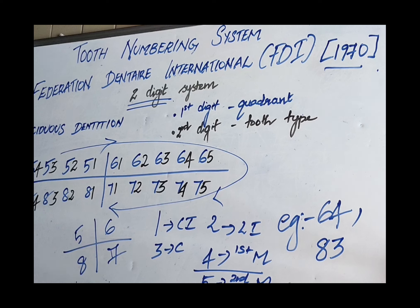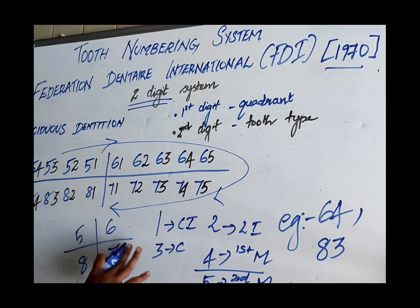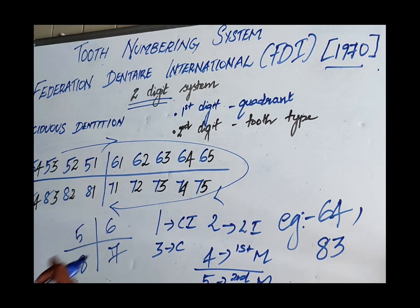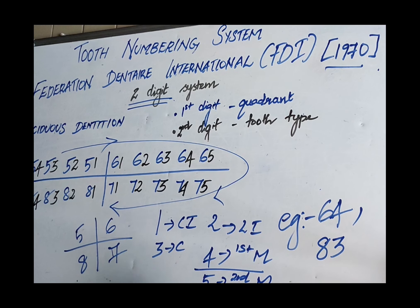That is all about FDI system for permanent and deciduous dentition. The advantages of the FDI system are that it is simple and convenient to use, very easy for verbal communication, easy for data entry, and compatible with computers. That concludes the topic of tooth numbering systems. Thank you.